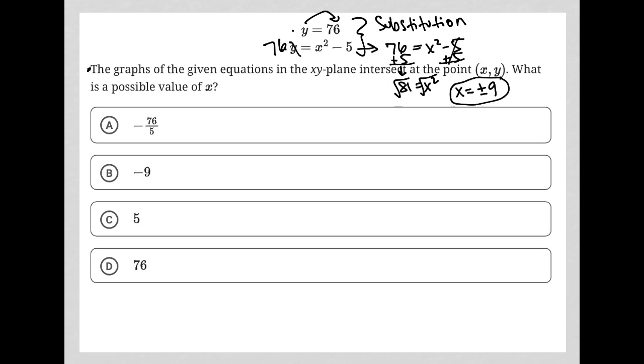So I've already solved that. We know that x can be positive 9 or x can be negative 9, and the only one of those that shows up on the answer list here is negative 9 at choice B.